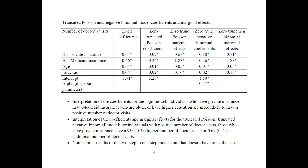On the next slide I have estimated hurdle models — the two-step models, also called truncated Poisson and negative binomial models — along with their coefficients and marginal effects. Recall from the lecture that in the first step you have a binary process determining whether the outcome is zero or positive. We can estimate this with a logit model, where the dependent variable is 0 or 1 indicating whether the person has zero or positive doctor visits.